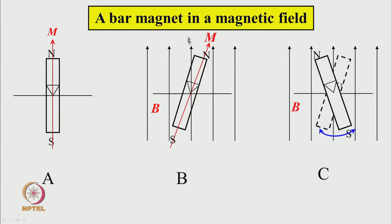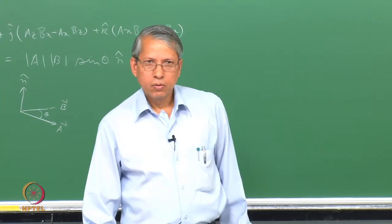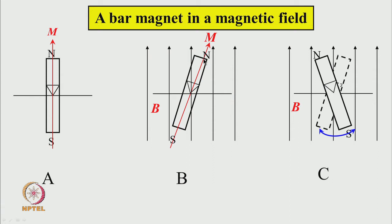The magnet will try to orient itself along the direction of the magnetic field, so that the north pole points in that direction and the south pole points in the opposite direction — that will be the minimum energy. To do that, it has to experience a torque so that it can rotate. So a bar magnet placed in a magnetic field will experience a torque.